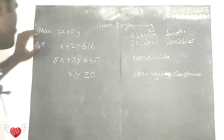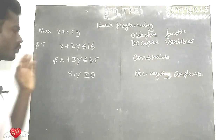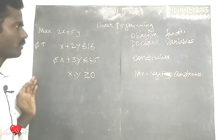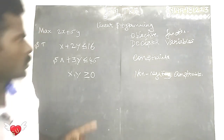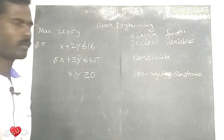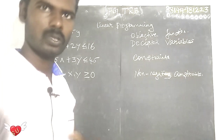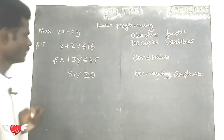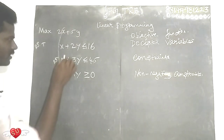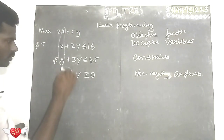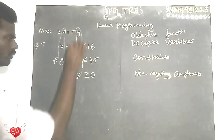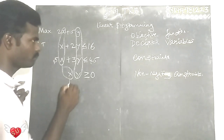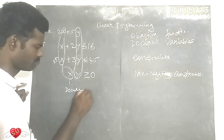We need to know about the maximum and minimum, and we need to know about the answer. First, what we need to know about this — the decision variables. Variables are x and y. So x values and y values are decision variables.